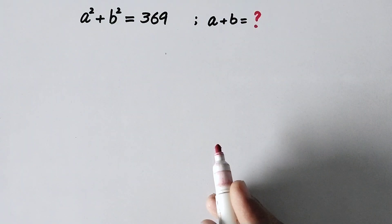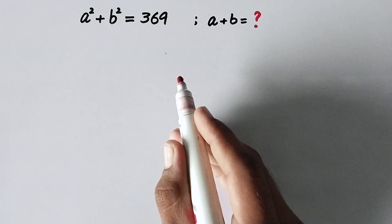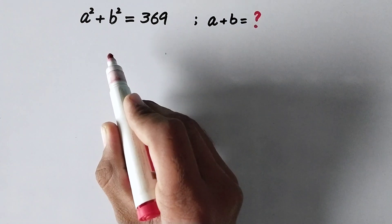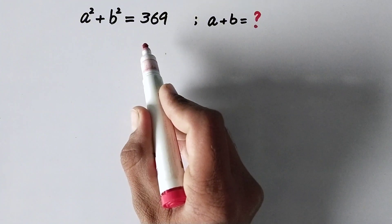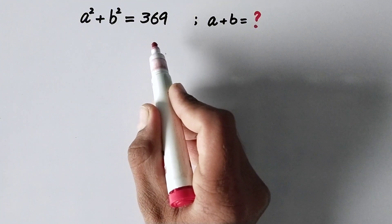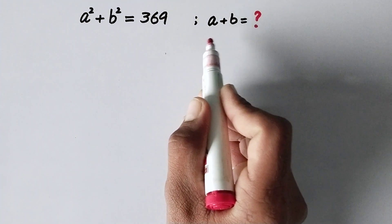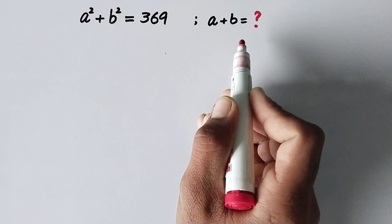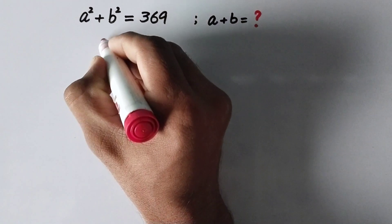Hello everyone and welcome to Explode Maths. Today the question we have to solve is: if a squared plus b squared is equal to 369, then what is the value of a plus b? So here let us see the solution.